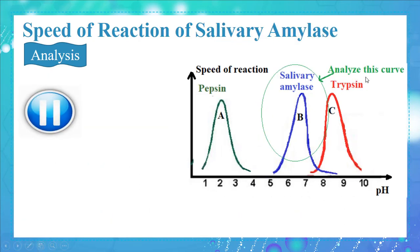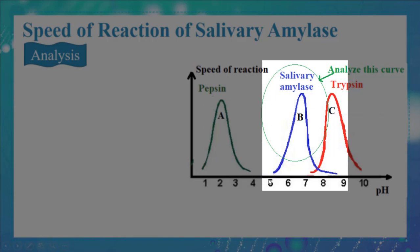Now try to analyze the curve related to salivary amylase. At pH equal to 5, the speed of reaction of salivary amylase was negligible. As the pH increased to 7, the speed increased to the maximum. As the pH increased to 9, the speed of the reaction decreased to null again.